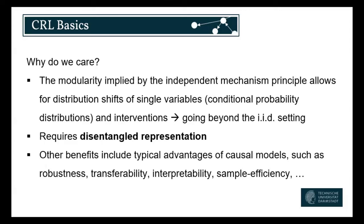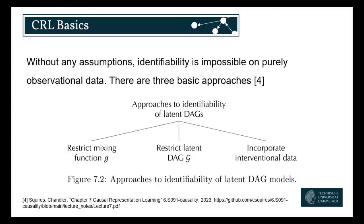If we have such a disentangled representation, we have our typical causality advantages. Models are more robust because we have all these components individually. We can transfer some components or distribution knowledge about some variables to other settings. It's much more interpretable if we have the variables and the respective probability distributions, and even more sample efficient as we can decide to only train some specific parts. However, even from Jonas's lecture, you already heard that without any further assumptions, you can't get identifiability. So there are three basic high level strategies for successful representation learning.